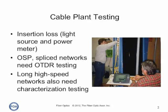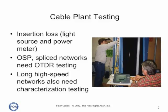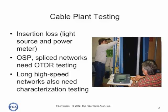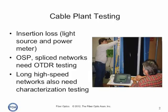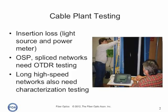Links used for very high speed outside plant networks, typically greater than 10 gigabits per second, will also require fiber characterization: testing for spectral attenuation, chromatic dispersion, and polarization mode dispersion.